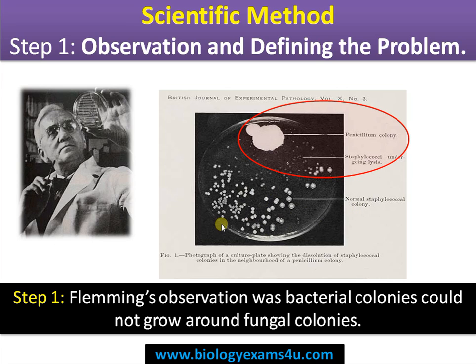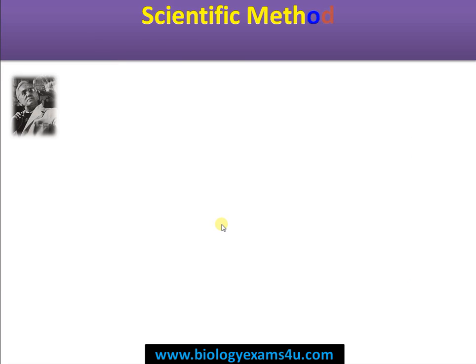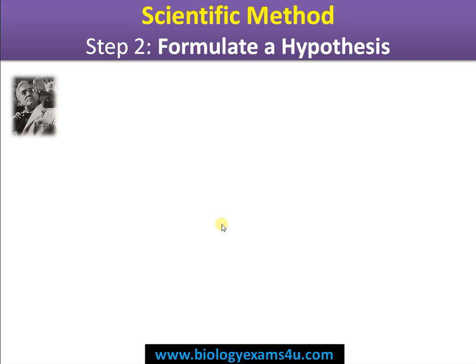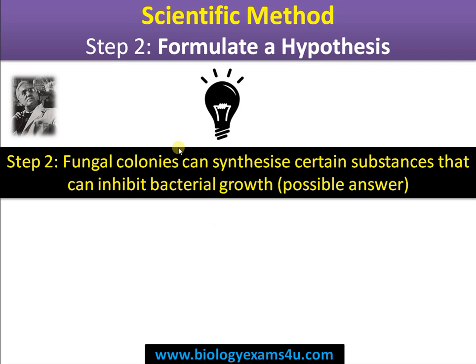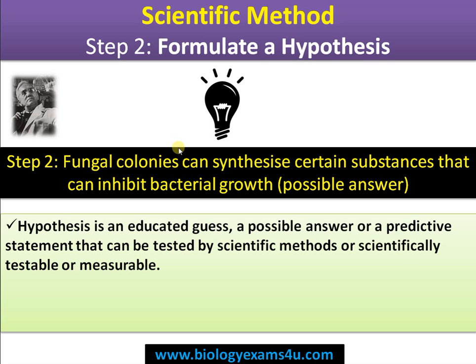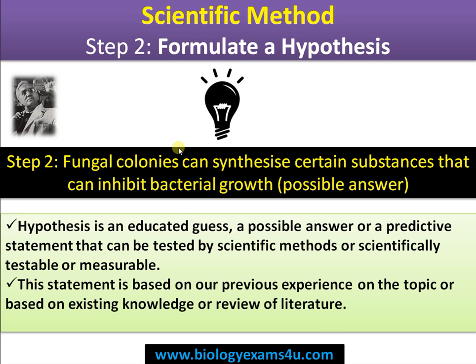So Step 1 is observation and defining the problem. Step 2 is formulating a hypothesis. Fleming's hypothesis was that fungal colonies can synthesize certain substances that inhibit bacterial growth. A hypothesis is a possible answer — an educated guess or a predictive statement that can be tested scientifically, made based on previous experience, existing knowledge, or a review of literature.